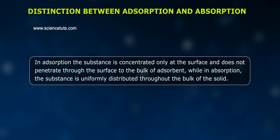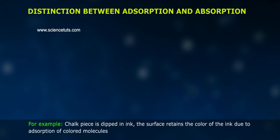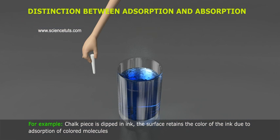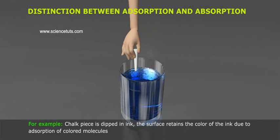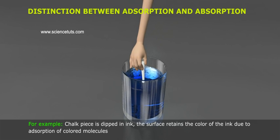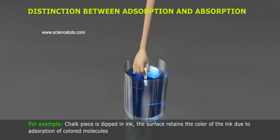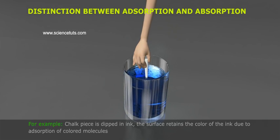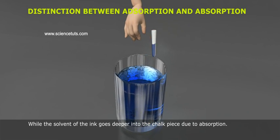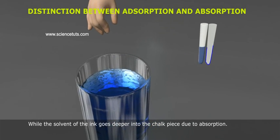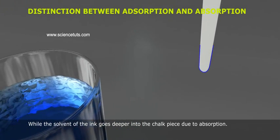While in absorption, the substance is uniformly distributed throughout the bulk of the solid. For example, when a chalk piece is dipped in ink, the surface retains the color of the ink due to adsorption of color molecules, while the solvent of the ink goes deeper into the chalk piece due to absorption.